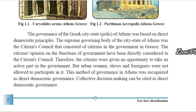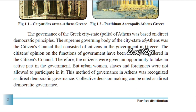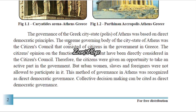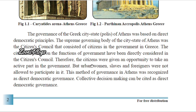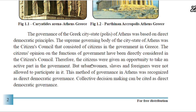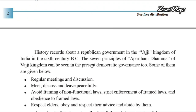To summarize Athens: there was a city-state, the polis, in Athens, based on direct democratic principles. There was a supreme governing body — the citizens' council — that consisted of citizens in Greece. Urban women, slaves, and foreigners were not allowed to participate, but all other citizens in Athens directly participated in the government's decisions. They were the active people in Athens.